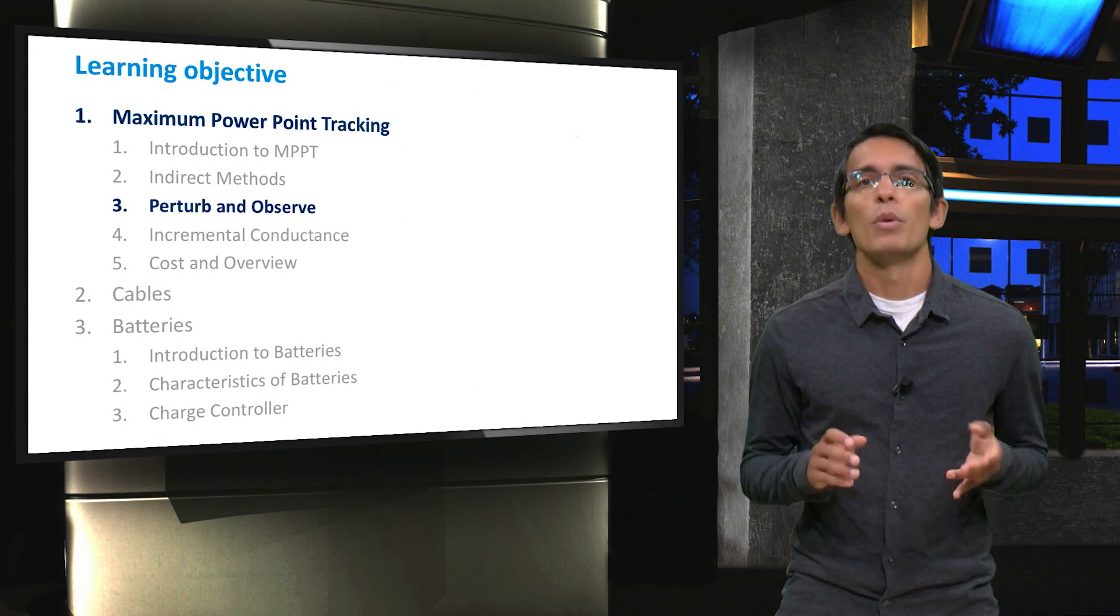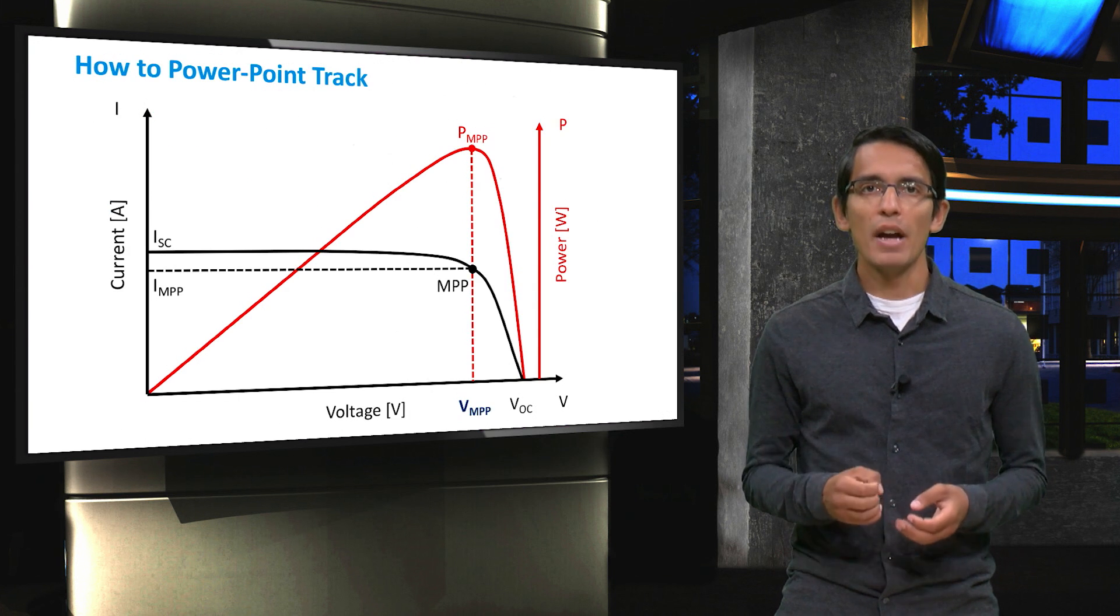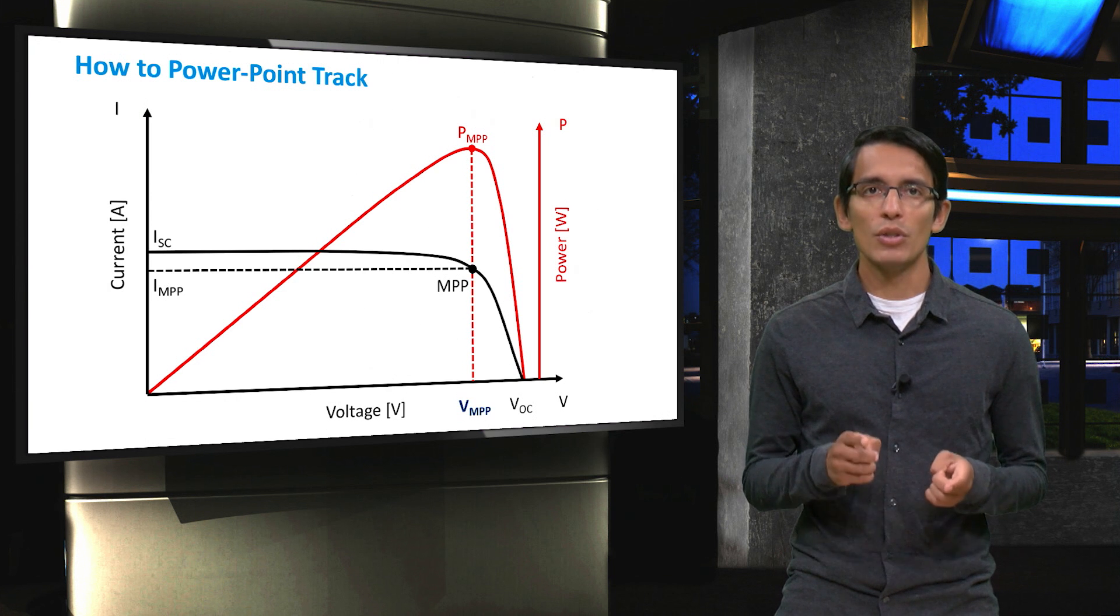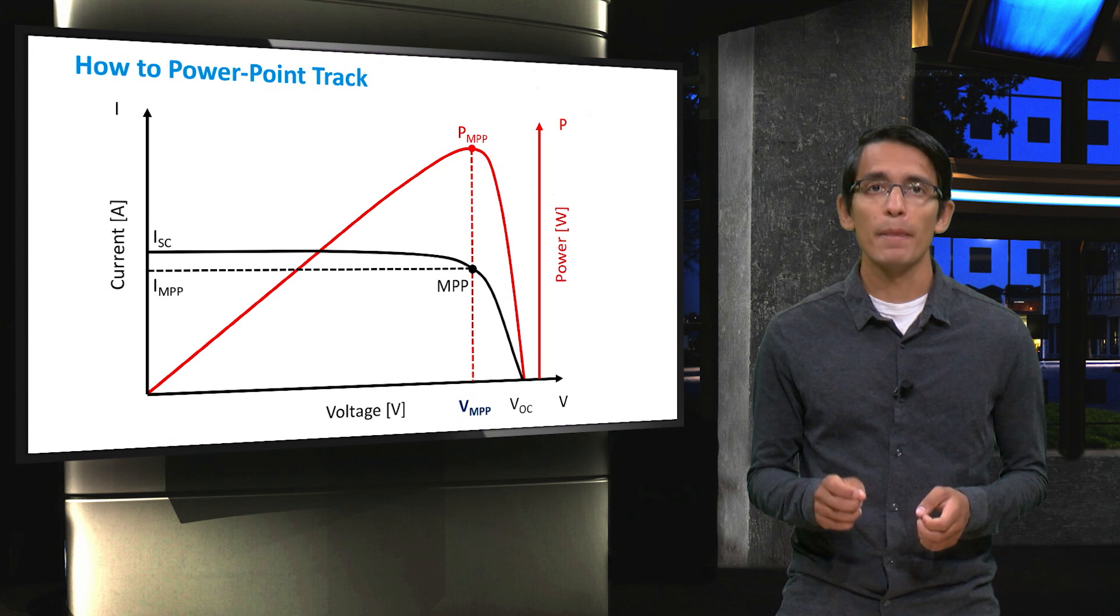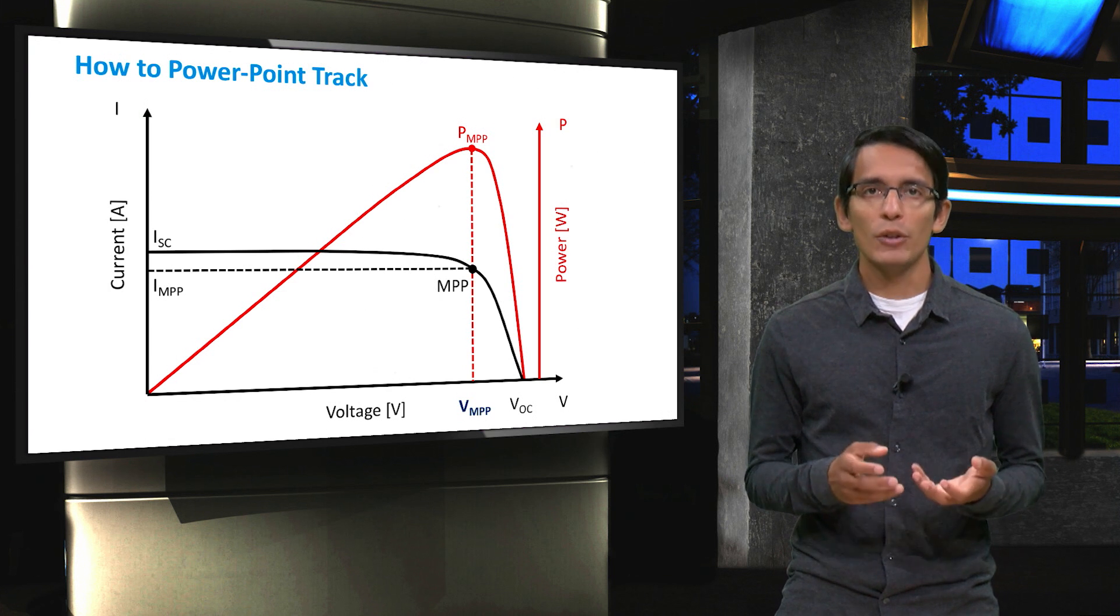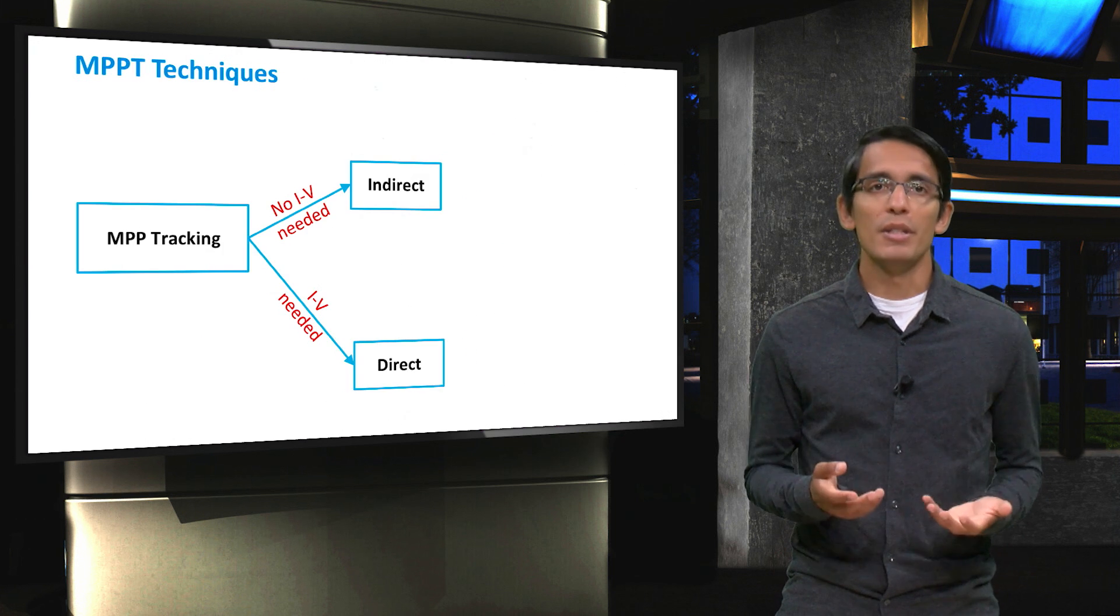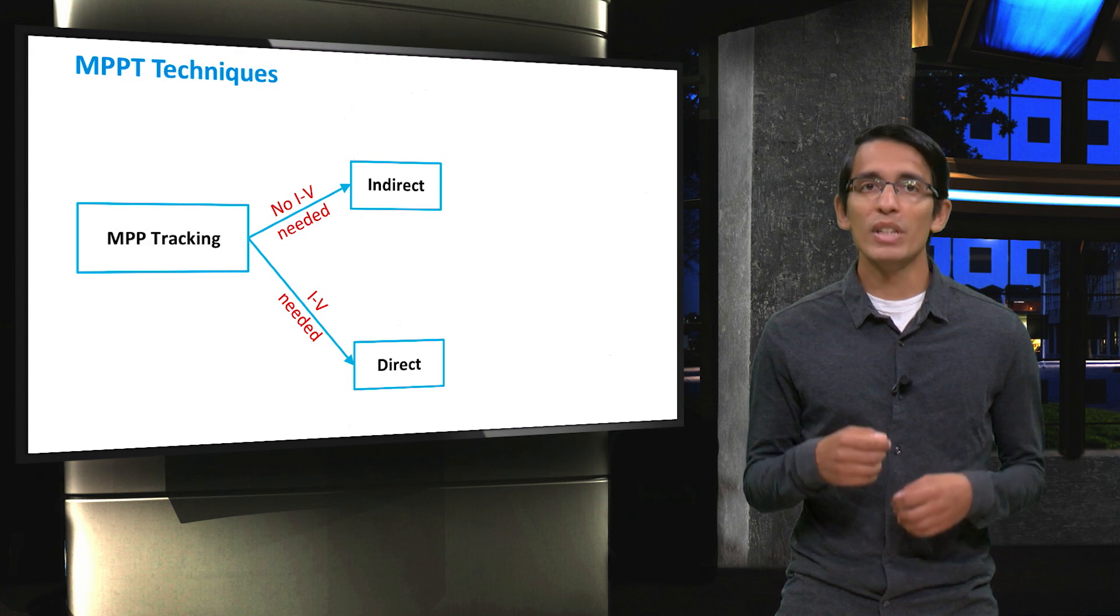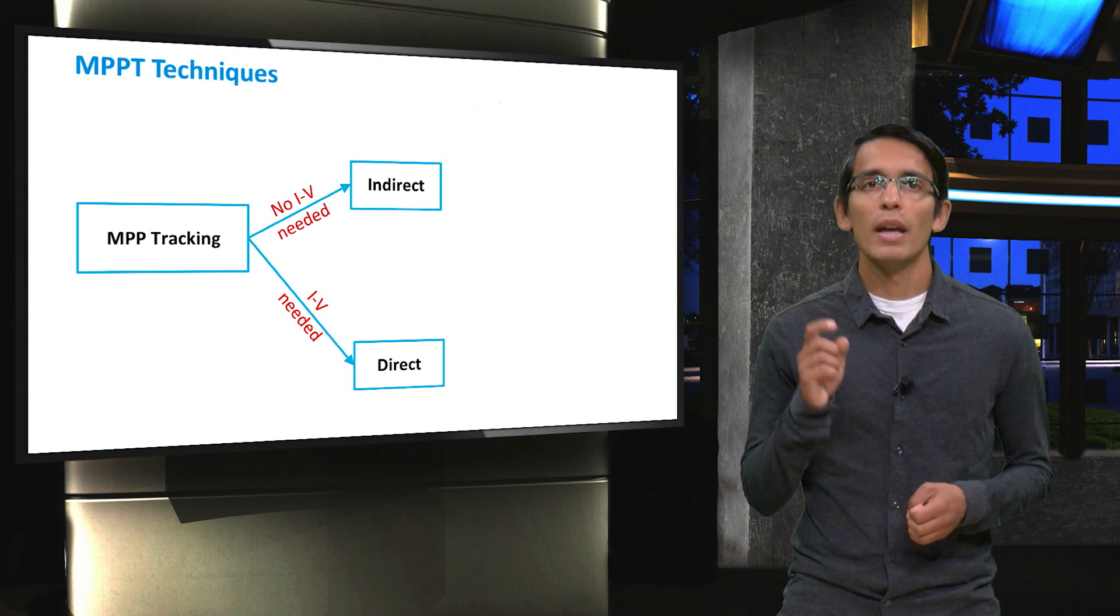So let's start with a quick recap. Just like with all other techniques, the goal is to find the voltage at which the solar panel outputs the most power, VMPP. Once we find VMPP, we will use some power electronics to make sure that this voltage is applied to our solar panel. We can divide all techniques into two different categories, indirect and direct. We already went over some indirect methods. In this video, we will focus on a direct method known as the perturb and observe technique.